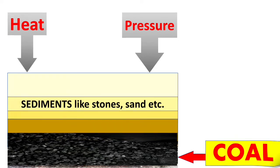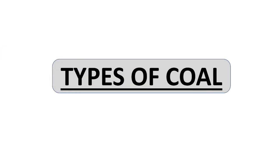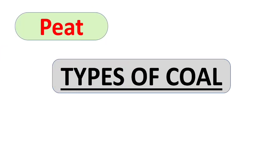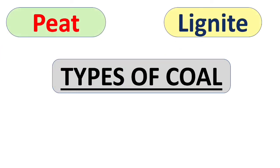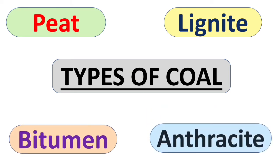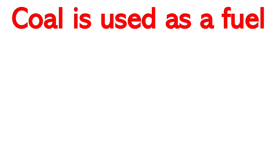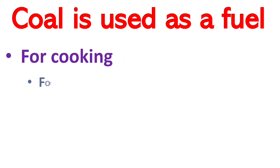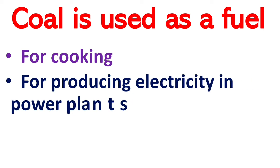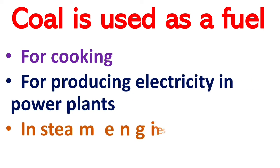Next are the types of coal. They are peat, lignite, bitumen, and anthracite. Anthracite is the best quality of coal. Coal is used as a fuel for cooking, for producing electricity in power plants, in steam engines, and more.